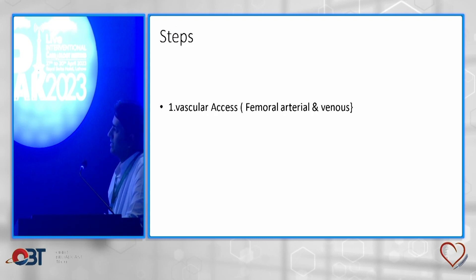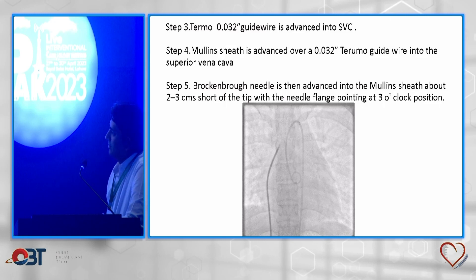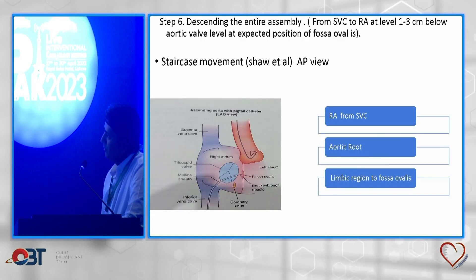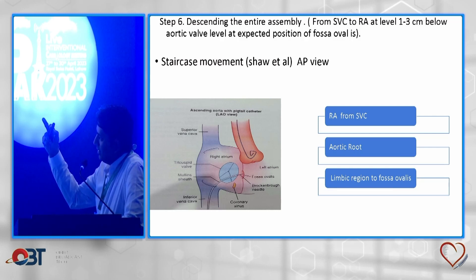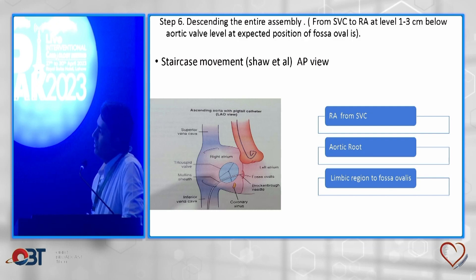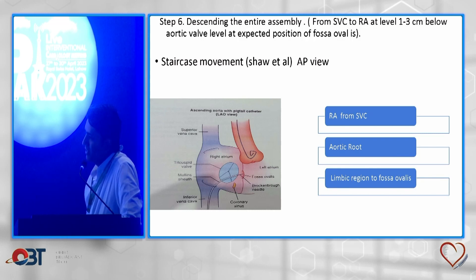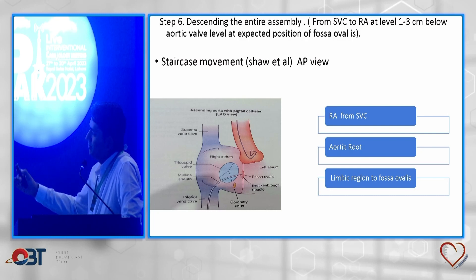Steps: vascular access — both femoral artery and vein. The pigtail, as already explained, identifies the right coronary sinus. Do the LV angiogram, go into the SVC, the innominate vein, then come down. While coming down from SVC to RA, we identify the aortic root and then the limbus region — the fossa ovalis. We do this in the AP view — the frontal view. This is the staircase movement. Shaw et al. described three dips: the first dip, the second dip, and the third dip.